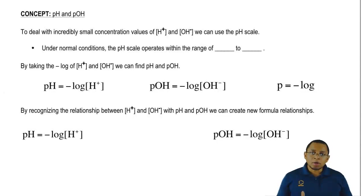Under normal conditions, the pH scale operates within the range of zero to 14, but what we need to realize is that the pH scale could be less than zero or it could be greater than 14.